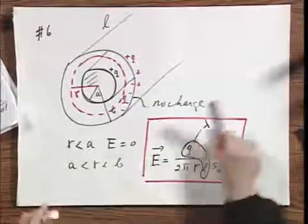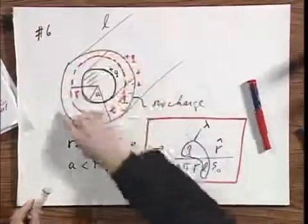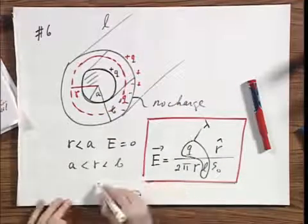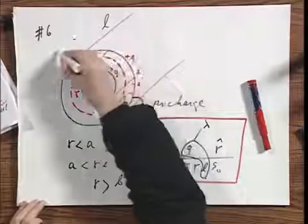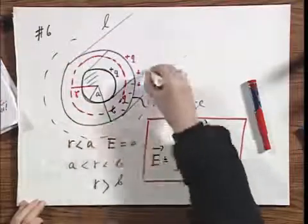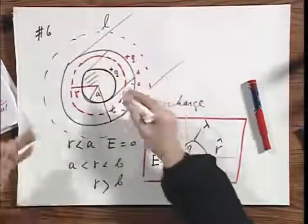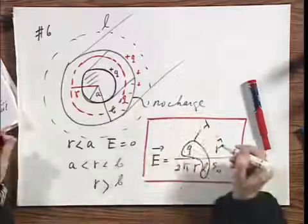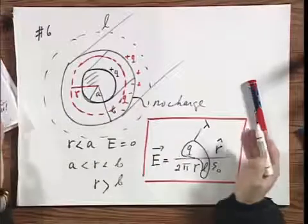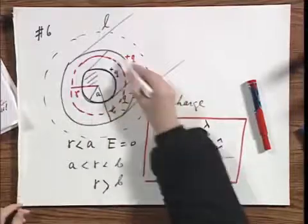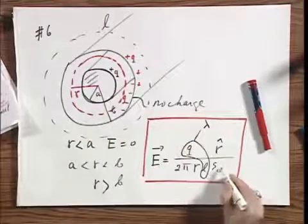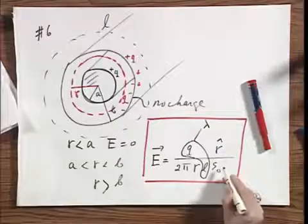But now, since there is no net charge on the outside, this is also true for R larger than B. Because if you make yourself a Gaussian cylinder with a radius larger than B, then the charge inside remains plus Q because this minus Q and plus Q here cancels each other out. There is no net charge, so you find exactly the same answer.